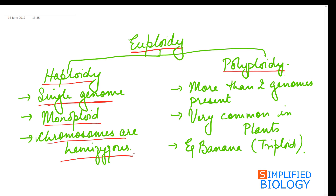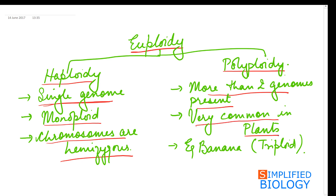Polyploidy — 'poly' meaning many — refers to the presence of more than two genomes. Polyploidy may occur due to endomitosis, where chromosomes divide but the cell does not divide, or by formation of gametes without reduction, or by fusion of two or more gametes. Polyploidy is very common in plants but not usually seen in animals. The best example is banana: the banana we normally eat is triploid, meaning it has three sets of chromosomes.